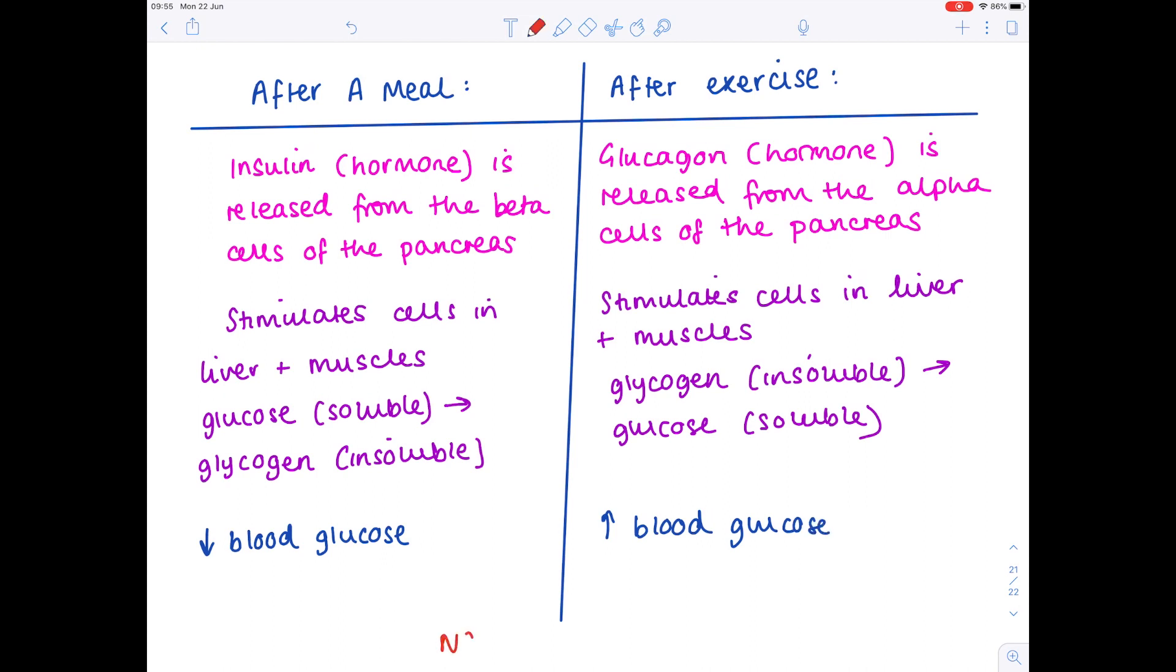So this is an example of negative feedback. So when you make a change your body has mechanisms in place which oppose that change. But what happens when that all goes wrong then you get a condition known as diabetes mellitus. So as a brief summary you're unable to control blood glucose concentrations.